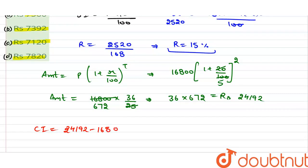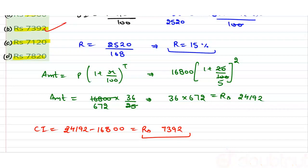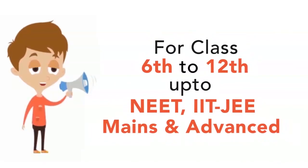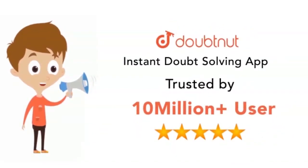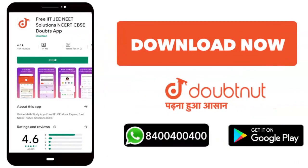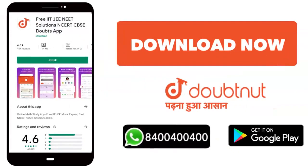ठीक है? तो 800 यहाँ से minus कर देते हैं. Minus करेंगे तो value कितनी आएगी? 24,192 minus 16,800 — यह आगी 7,392. तो rupees 7,392 यह क्या हो गया हमारा compound interest? So option B is correct. Class 6 to 12 से लेके IIT JEE Mains और Advanced के level तक, 10 million से ज़्यादा students का भरोसा. आज download करें Doubtnet app या WhatsApp कीजे अपने doubts 8444 नंबर पर.